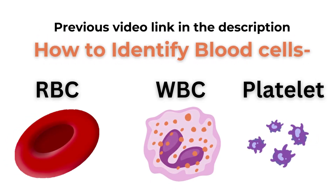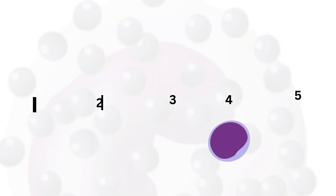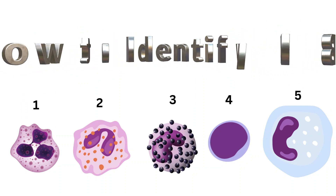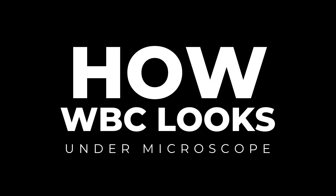In the previous video we had learned how to identify three types of blood cells: RBC, WBC, and platelet. Today we will see how to identify five different types of WBC, also known as leukocyte, and how they look under the microscope.